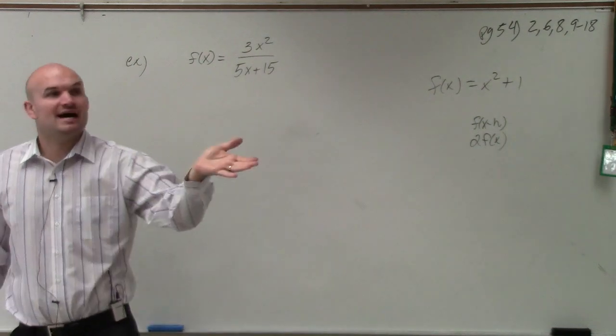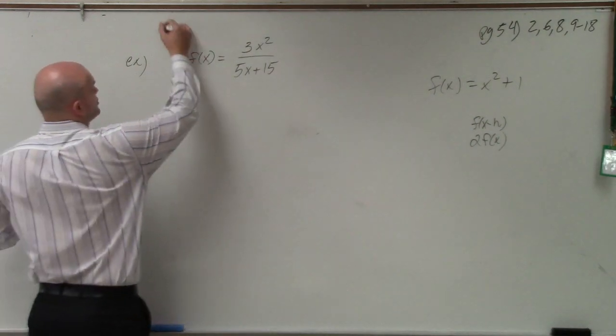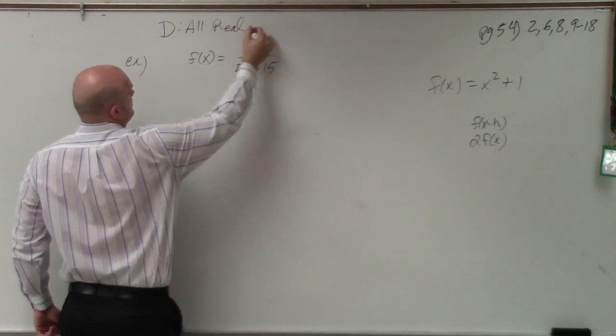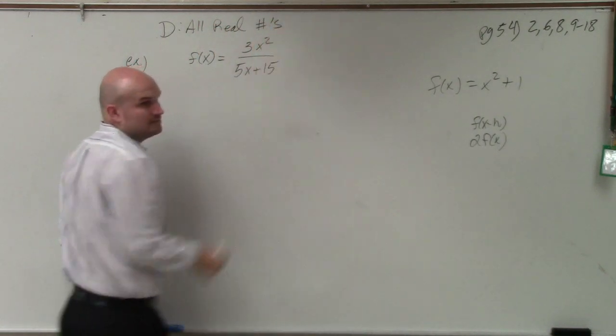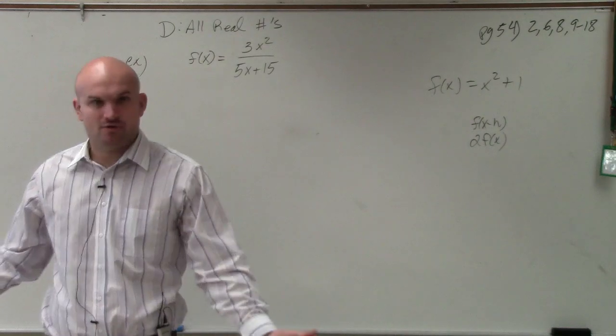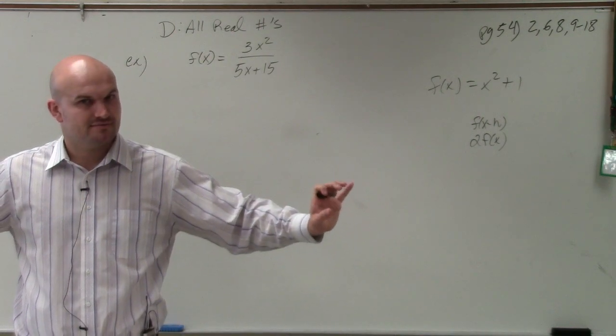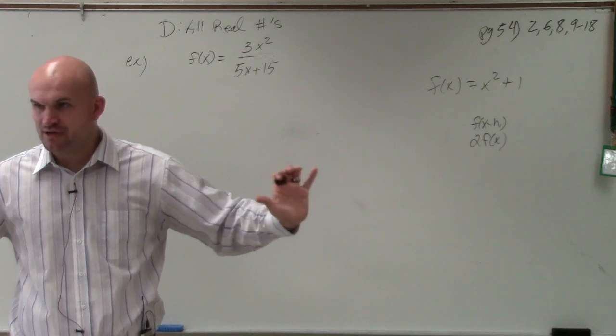So therefore, our implied domain is that our domain is all real numbers. That's our implied domain. It's all real numbers. They didn't tell us any restrictions. So our implied domain is all real numbers. However,